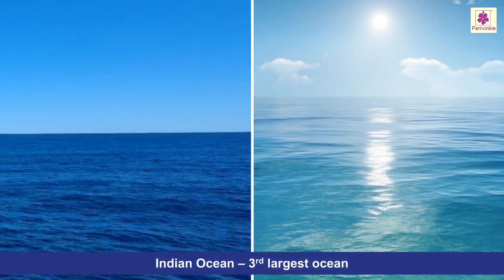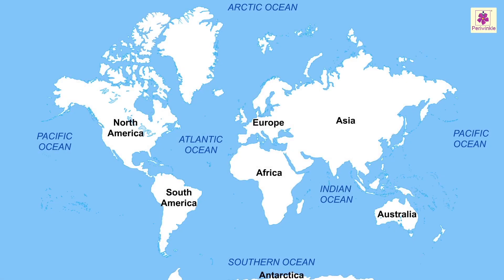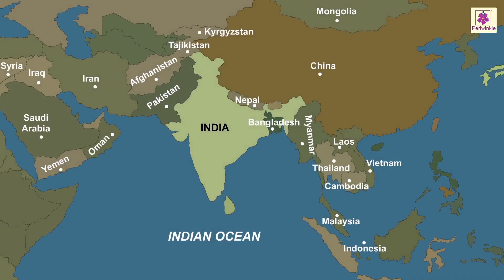The Indian Ocean is the third largest ocean. It has Asia to the north, Africa to the west, Australia to the east, and the Southern Ocean to the south. It is named after India — the only ocean which is named after a country.